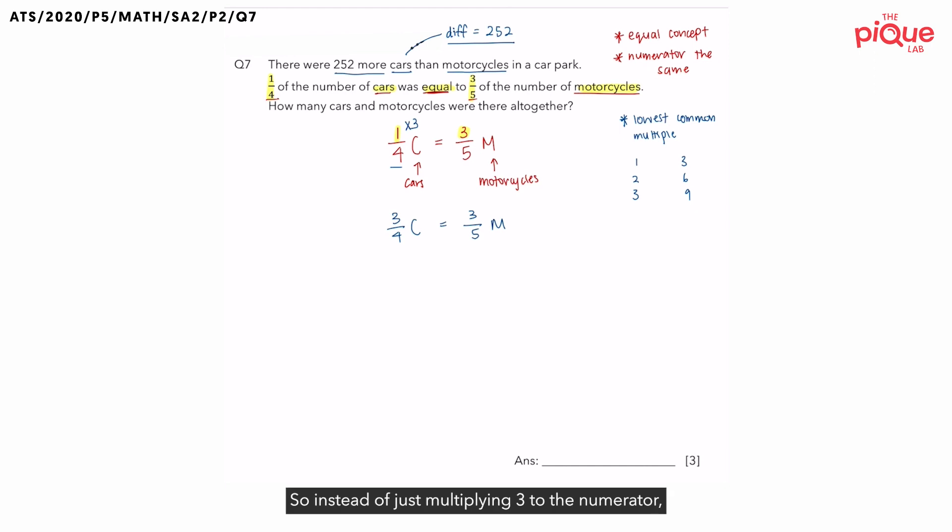you have to do the same to your denominator. So instead of just multiplying 3 to the numerator, we have to do it to the denominator as well. Multiply by 3, our 4 here will be 4 times 3 instead, which is 12.